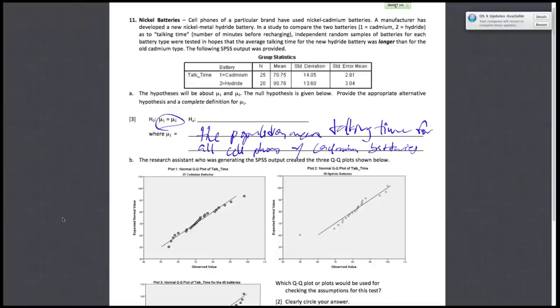So after we finish defining what mu1 and mu2 are, we need to figure out what the alternative hypothesis is. So you will refer back to this last part of the question. Independent random samples of batteries for each battery type were tested in hopes that the average talking time for the new hydride battery was longer than for the old cadmium type.